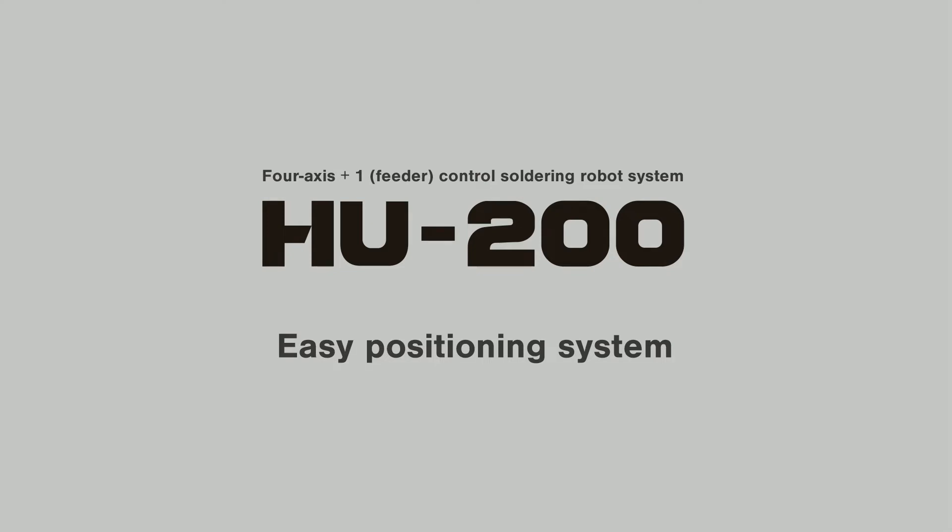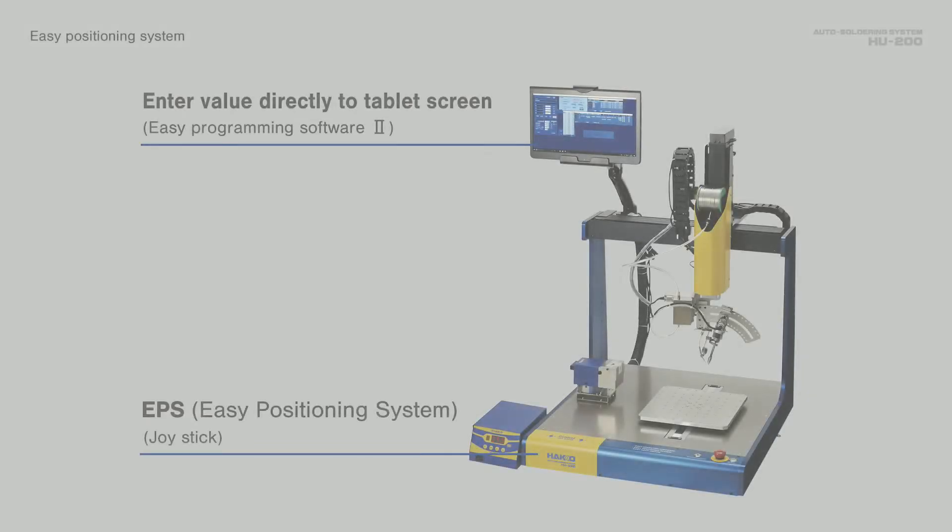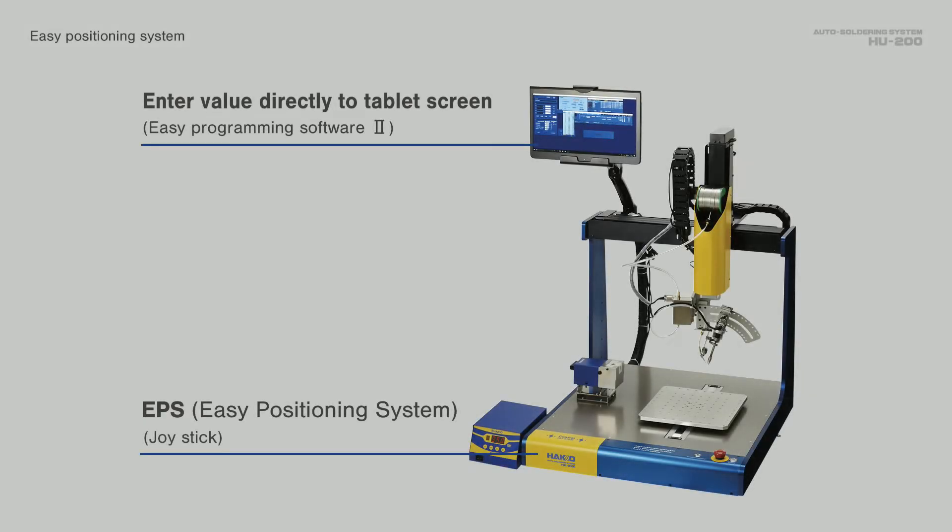Description of Easy Positioning System. The HU200 is equipped with the Easy Positioning System to enable easy coordinate setting with the joystick incorporated in the robot.